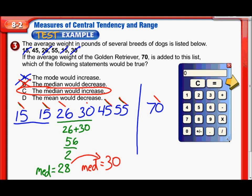The median did indeed increase to 30 from 28. And finally D, the mean would decrease. Is that true? Absolutely not. When you add a larger number to a set of data, the mean is going to increase. If you add a small number, your mean would decrease. But when you add a big number like the 70, your mean is only going to increase, not decrease.